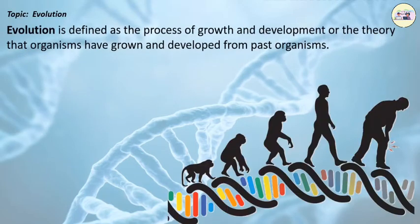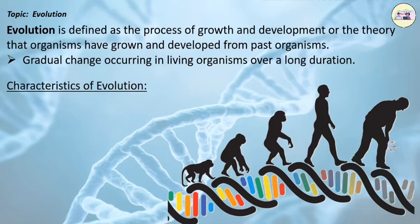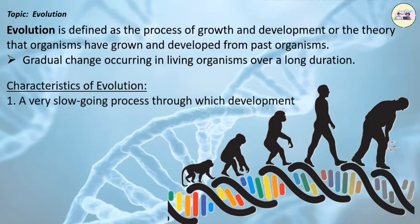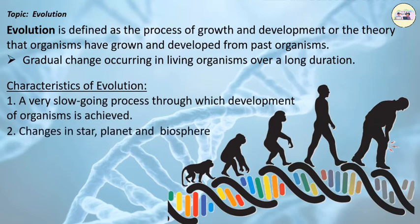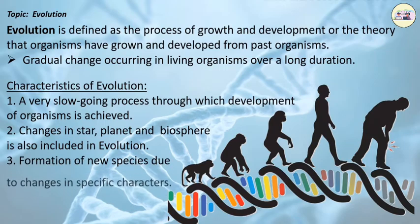Evolution is defined as the process of growth and development, or the theory that organisms have grown and developed from past organisms. Evolution is the gradual change occurring in living organisms over a long duration. Characteristics of Evolution: it is a very slow process through which development of organisms is achieved. Changes in stars, planets and the biosphere are also included in evolution. Formation of new species due to change in specific characters.